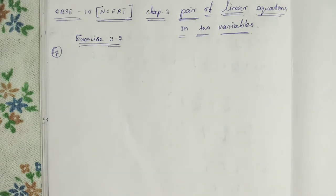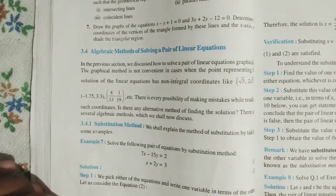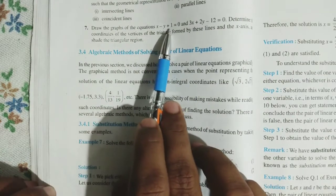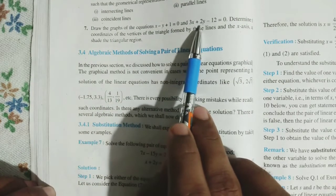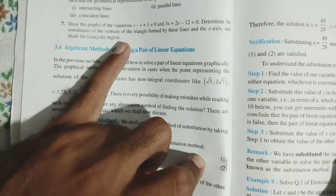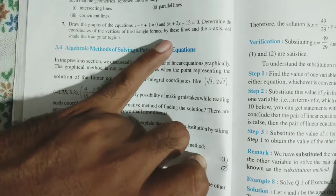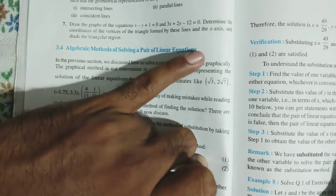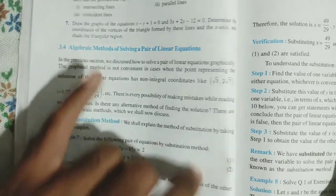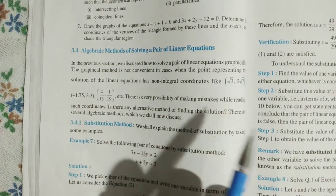In this video, let me solve Exercise 3.2, problem 7, 10th standard. In this problem, they ask us to draw the graph of the equations x minus y plus 1 equal to 0, and 3x plus 2y minus 12 equal to 0, and determine the coordinates of the vertices of the triangle formed by these lines. Also, find and shade the triangular region.